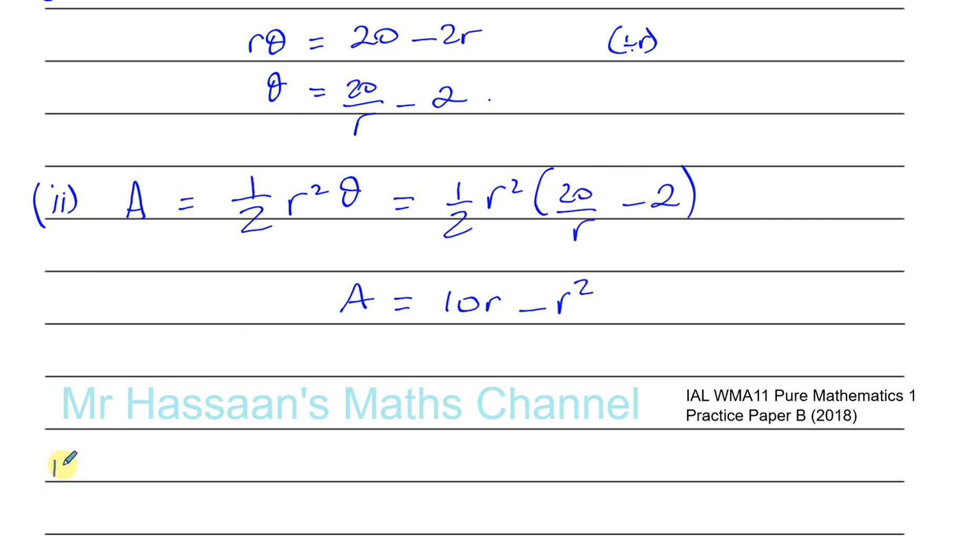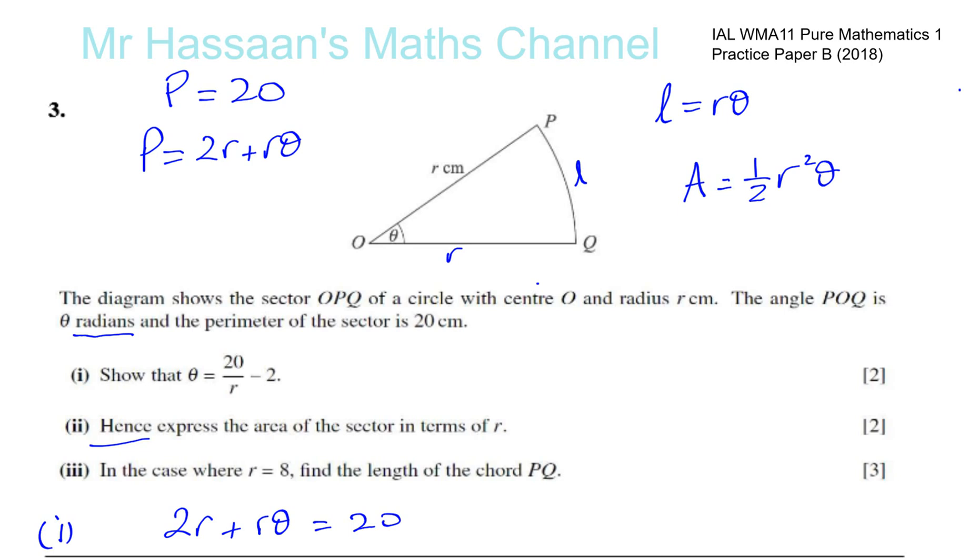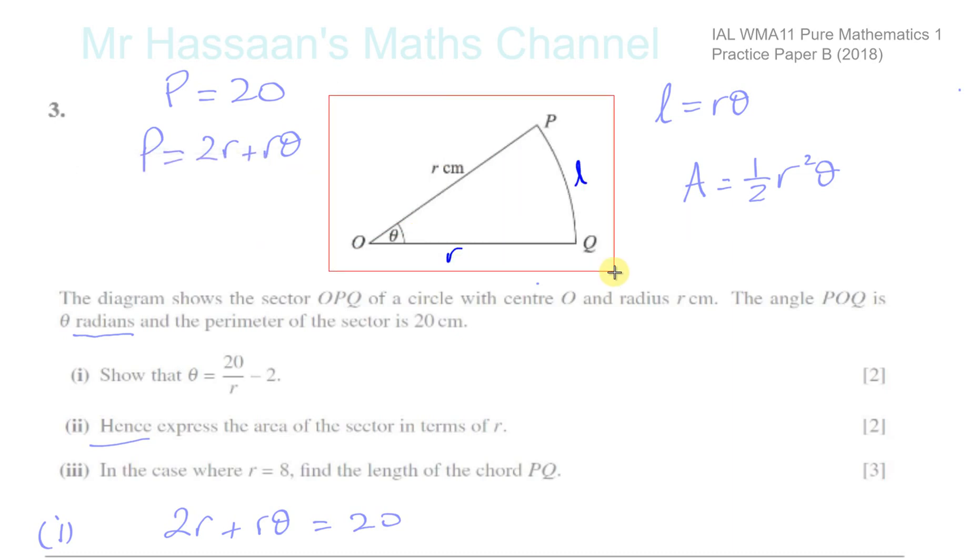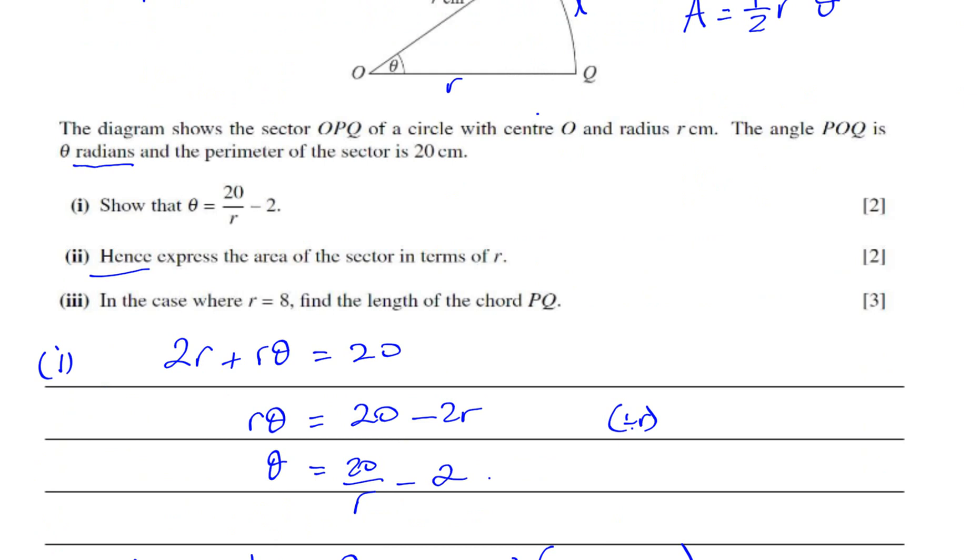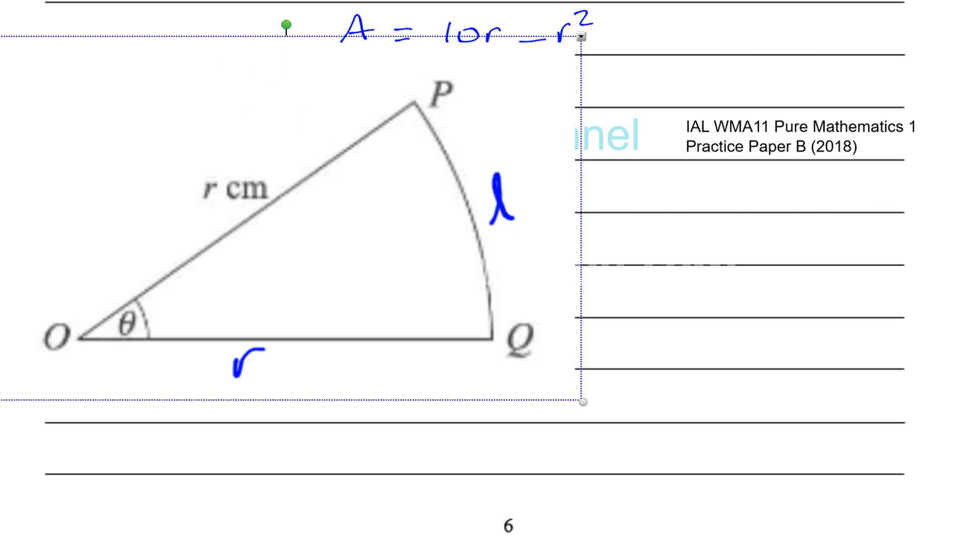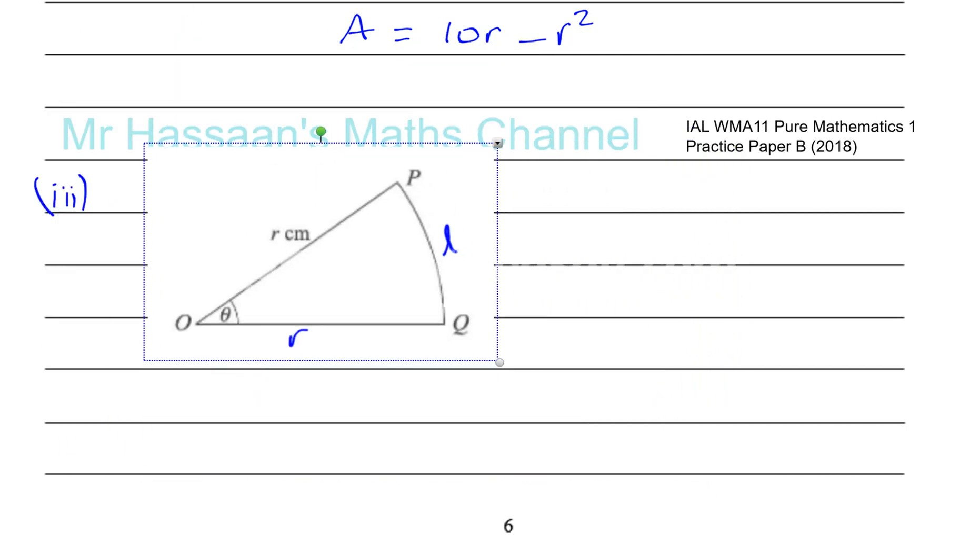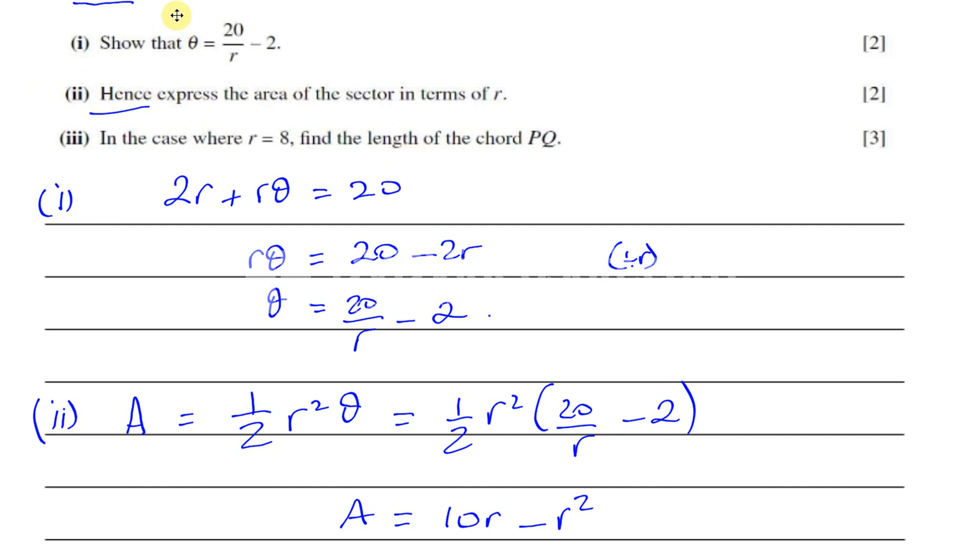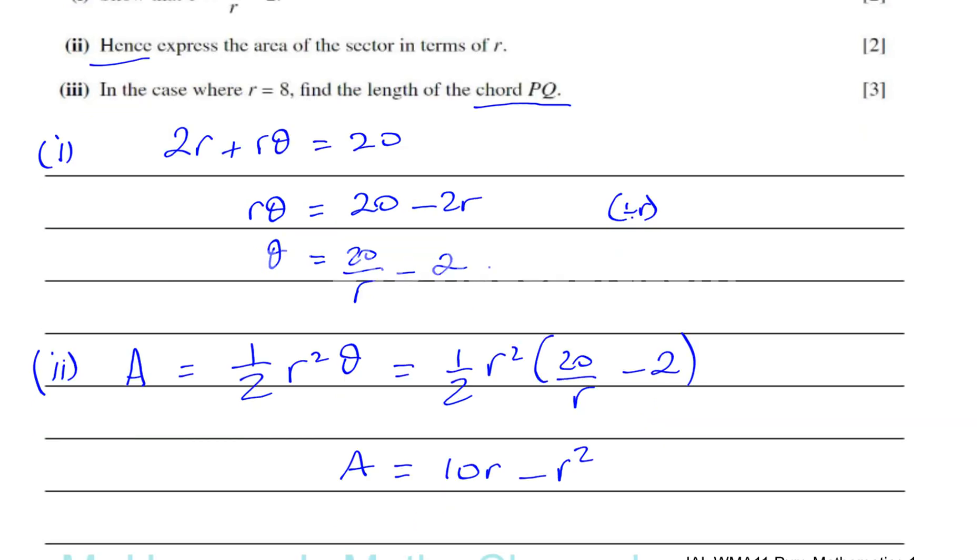That's part 2. And now part 3. Part 3, it says, in the case where R equals 8, find the length of the chord PQ. Now this is a question when I said this question to my students, there were many students who didn't read the question properly and they just assumed the question was asking you to find the length of the arc PQ. They didn't think about the difference between the arc and the chord. The question very clearly states find the length of the chord PQ, not the arc PQ. So be very careful about that.